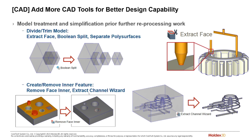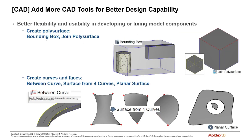We now have many functions to manipulate a 2D face such as extruding, revolving, etc. We can create and remove inner features using Studio — this is more conveniently done here than in CAD Doctor. We also have a new extract channel wizard which takes a solid geometry and extracts all the internal surfaces from that geometry. This is very important for cooling channels when you're trying to create a solid geometry of your cooling system.